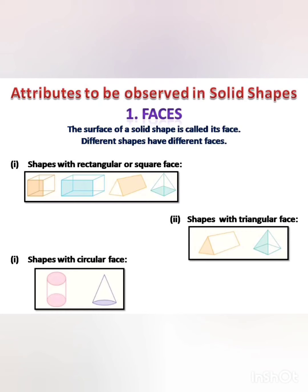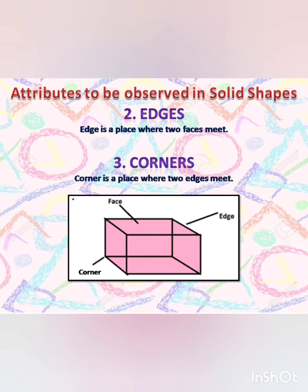There are shapes with rectangular or square faces — for example, cube, cuboid, the sides of a prism, and the base of a pyramid. There are also shapes with triangular faces, for example, pyramid and prism. And there are shapes with circular faces too — for example, cylinder and the base of a cone.